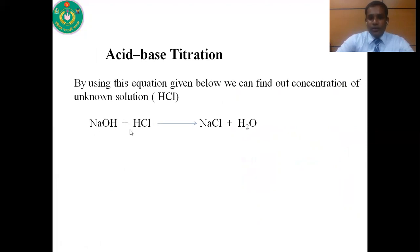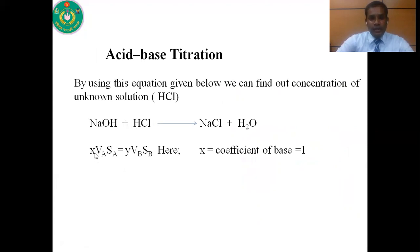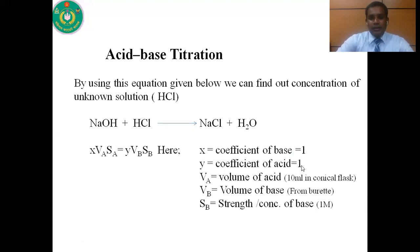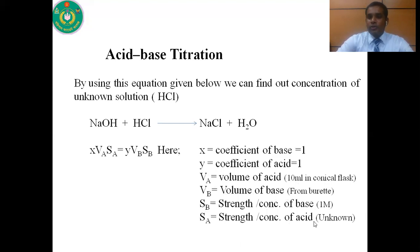Here we use sodium hydroxide and hydrochloric acid. The reaction is: sodium hydroxide reacts with hydrochloric acid to form sodium chloride and water. For this reaction, the equation is XVₐSₐ = YV_bS_b. Here X equals the coefficient of base and Y equals the coefficient of acid. For this reaction, X and Y are both 1. VA equals the volume of acid, which is 10 ml. VB equals the volume of base, which we add from the burette. SB equals the strength or concentration of base, which is 1 molar. SA is the strength or concentration of acid, which is unknown. By using this equation, we can determine the concentration of the unknown acid.